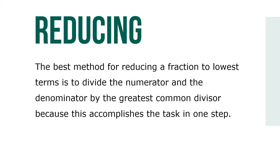The best method for reducing a fraction to lowest terms is to divide the numerator and the denominator by the greatest common divisor, because this accomplishes the task in one simple step. When the greatest common divisor is not obvious to you, use the following steps to determine it.